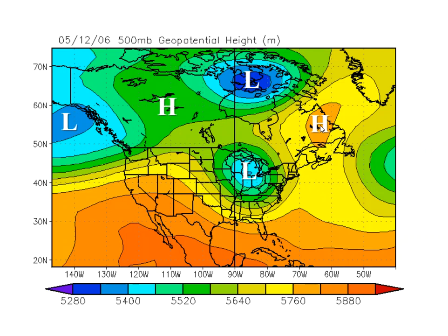That means the natural west to east progression of mid-latitude weather systems across Canada and the U.S. northern border states gets interrupted by the two blocking highs, and weather systems tend to move slowly.